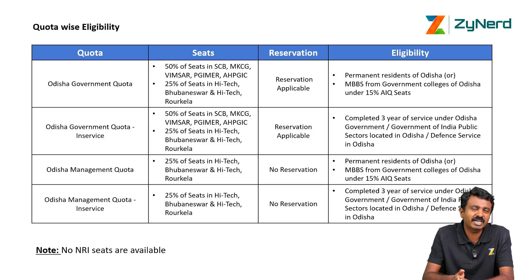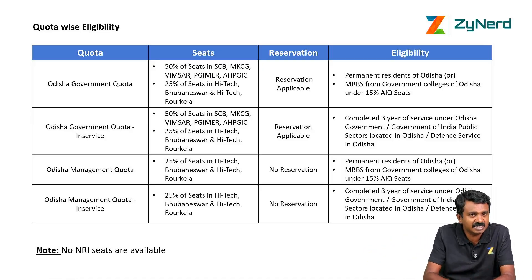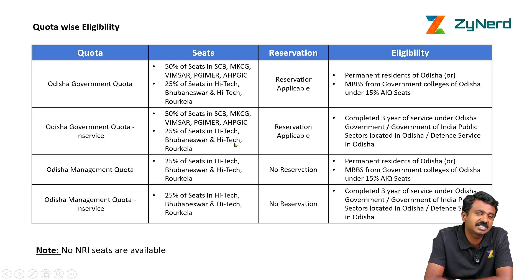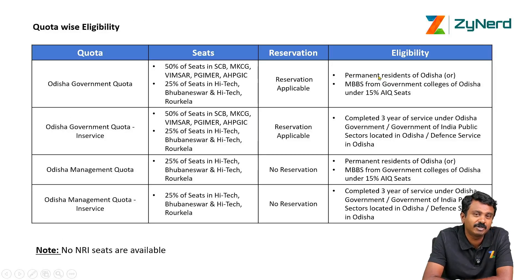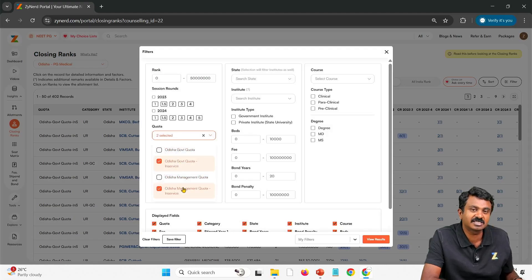Let's say there are seats available in Odisha in a government institute. 50% goes into in-state quota; 50% went into all-India counseling. Within the available in-state seats — say 100 seats in SCB — 50% goes into Odisha government quota and the other 50% goes into in-service. For management seats, 100 seats are split as 25% each across four categories. So if you are a permanent resident or MBBS from Odisha, you select government quota. If you are an in-service candidate, you select that. These are called direct seats and service seats respectively.